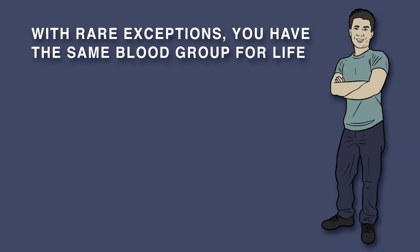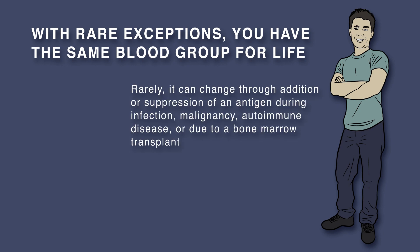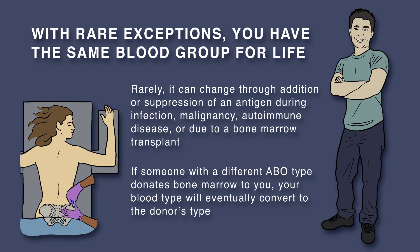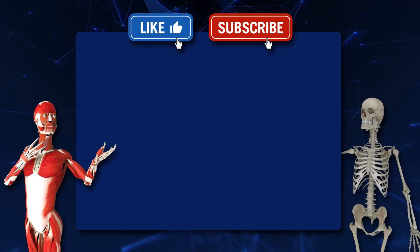It must be noted that, with rare exceptions, an individual has the same blood group for life. On rare occasions, it can change through addition or suppression of an antigen during infection, malignancy, autoimmune disease, or due to a bone marrow transplant. If someone with a different ABO type donates bone marrow to you, your blood type will eventually convert to the donor's type.